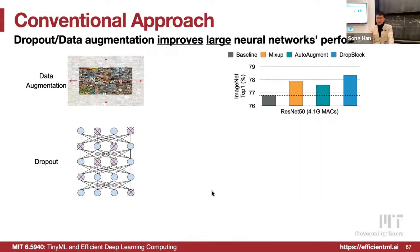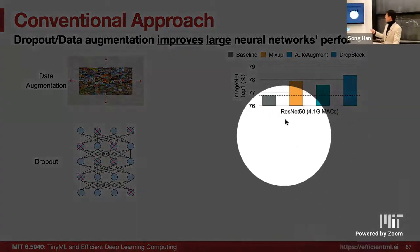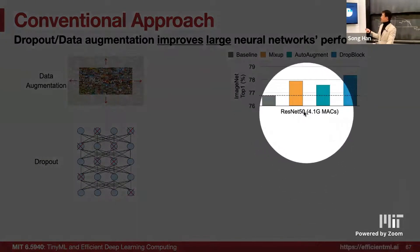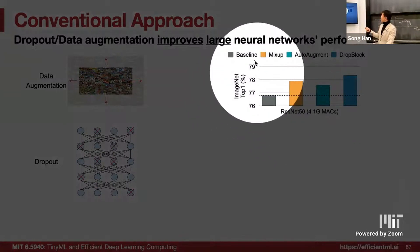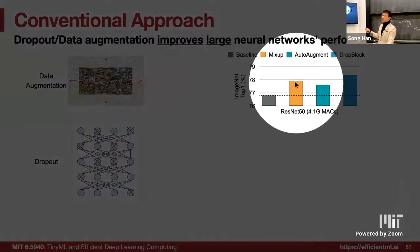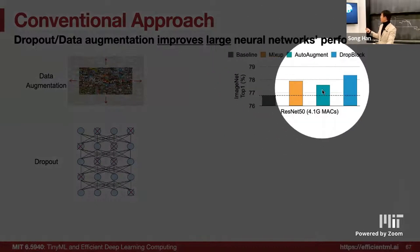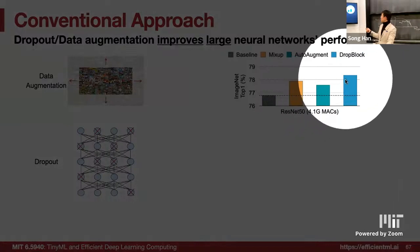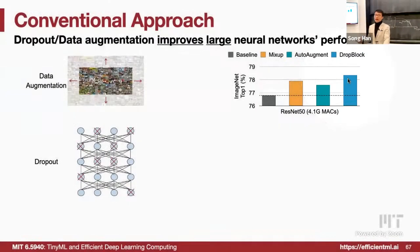Apart from data augmentation, another way to prevent overfitting is using dropout. During training we randomly select a few neurons and zero them out. People also use spatial dropout to randomly remove a few channels and drop blocks to remove blocks at coarser granularity. These techniques like dropout and data augmentation can greatly improve large neural networks' performance. For ResNet-50 at 4 giga-MACs: baseline is about 76.5, after MixUp almost 78, after AutoAugment more than 77, and using DropBlock more than 78.